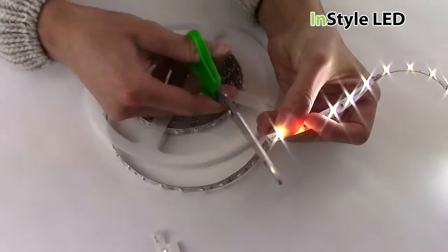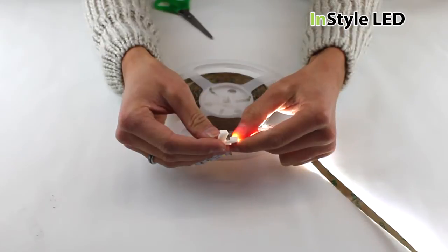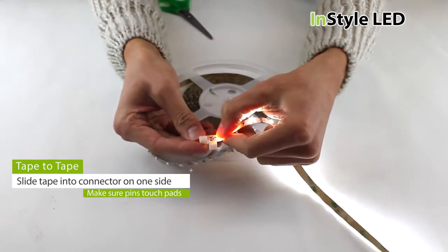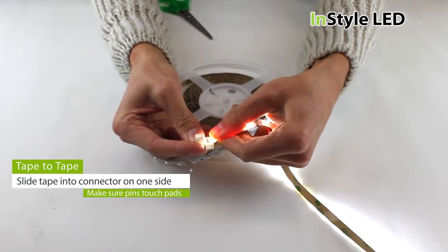The tape to tape connectors join two pieces of LED tape back together. You open both sides of the connector, peel the backing tape off the LED tape, slide the LED tape into the connector, and finally close it shut.